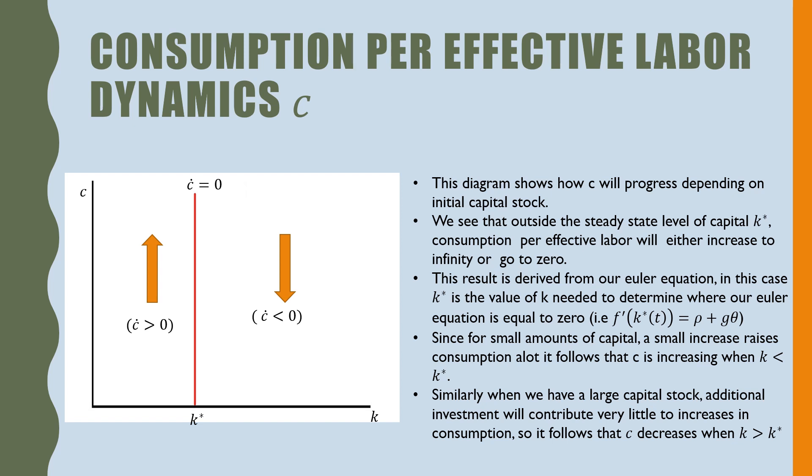Since for small amounts of capital, a small increase raises consumption a lot, it follows that c is increasing when k is less than k star. Similarly, when we have a large capital stock, additional investment will contribute very little in increasing consumption, so it follows c decreases when k is greater than k star.